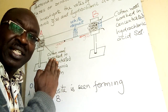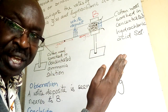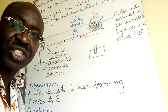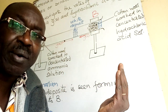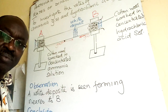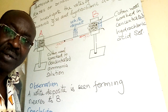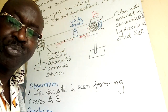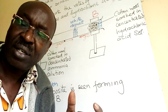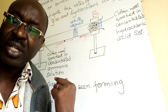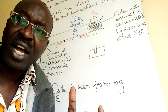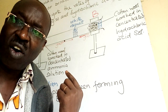The fact that the white deposit forms nearer side B suggests and confirms that the spreading movement of ammonia gas is faster than the spreading movement of hydrochloric acid gas. Why was HCl slow? It is because the gas from side B is denser — the density of hydrochloric acid gas is higher than the density of ammonia gas.